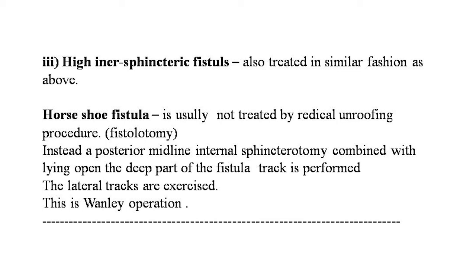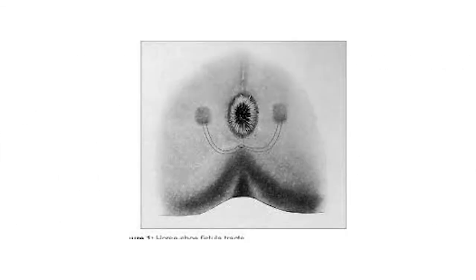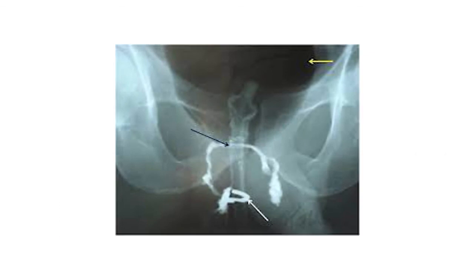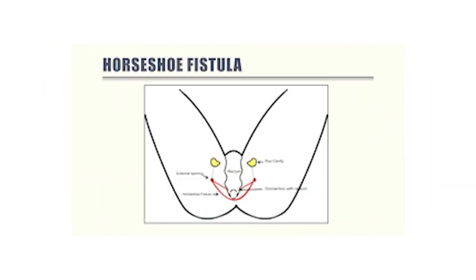Horseshoe fistula is not treated by radical unroofing (fistulotomy). Instead, posterior midline internal sphincterotomy combined with laying open the deep part of the fistula track is performed, and the lateral tracks are excised. Here is a good image showing the horseshoe fistula, shaped like the shoe of a horse — hence the name. This is also a fistulogram image and an animated picture showing the horseshoe fistula.